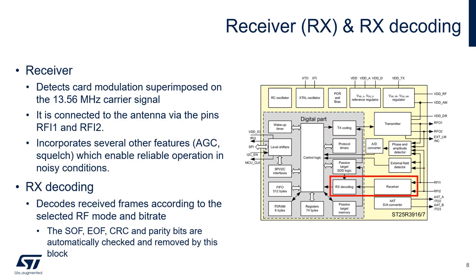The receiver's main function is to detect the tag modulation superimposed on the 13.56 MHz carrier signal. In order to do this, it can employ such functions as automatic gain control and squelch to clarify the incoming signal in noisy environments. It also decodes the incoming frames based upon the RF mode and bitrate selected. The start of frame, end of frame, CRC, and parity bits are removed, leaving only the data payload.